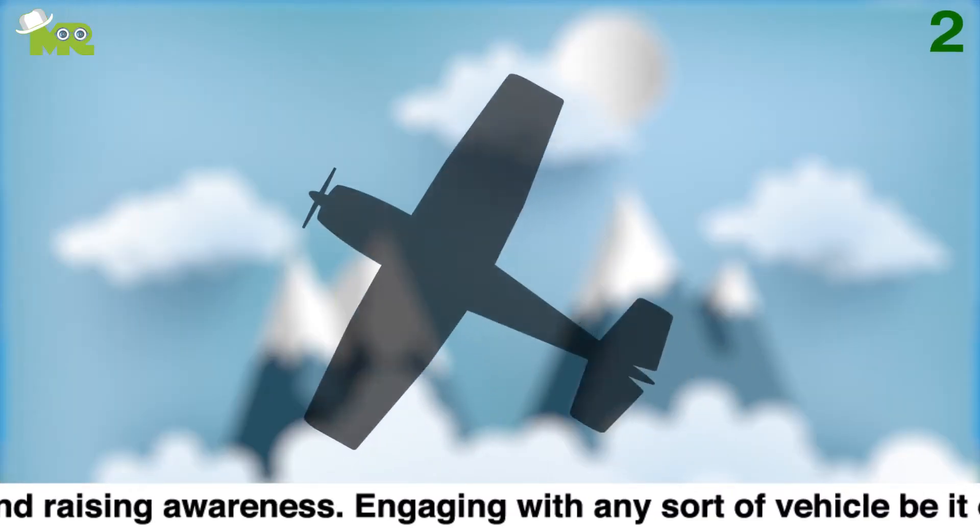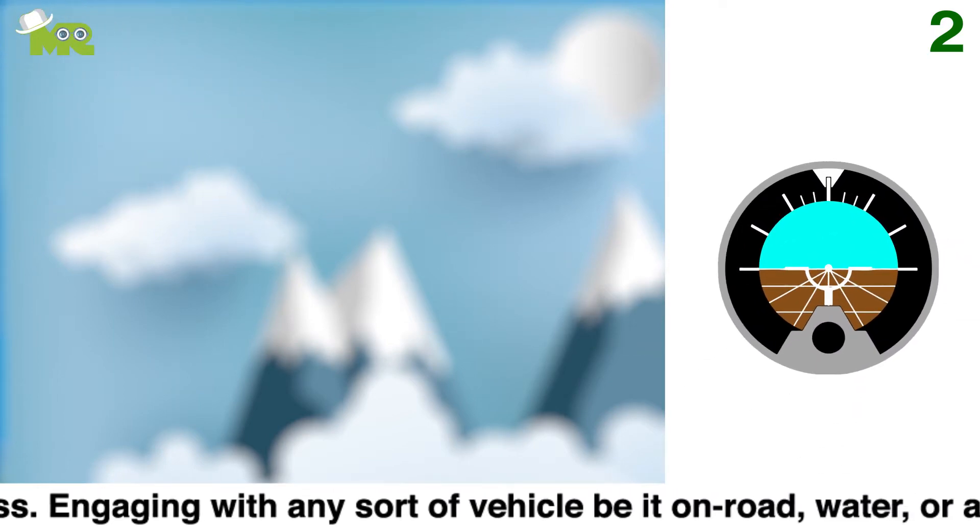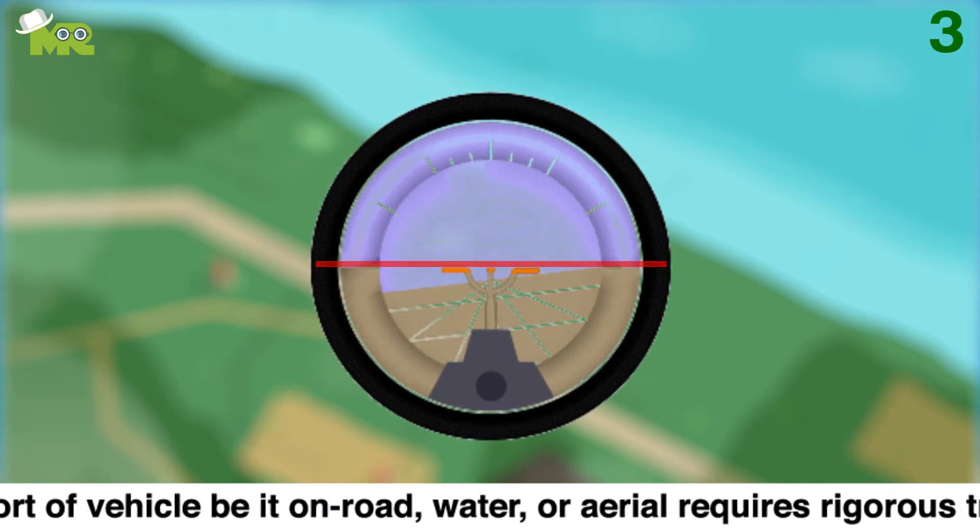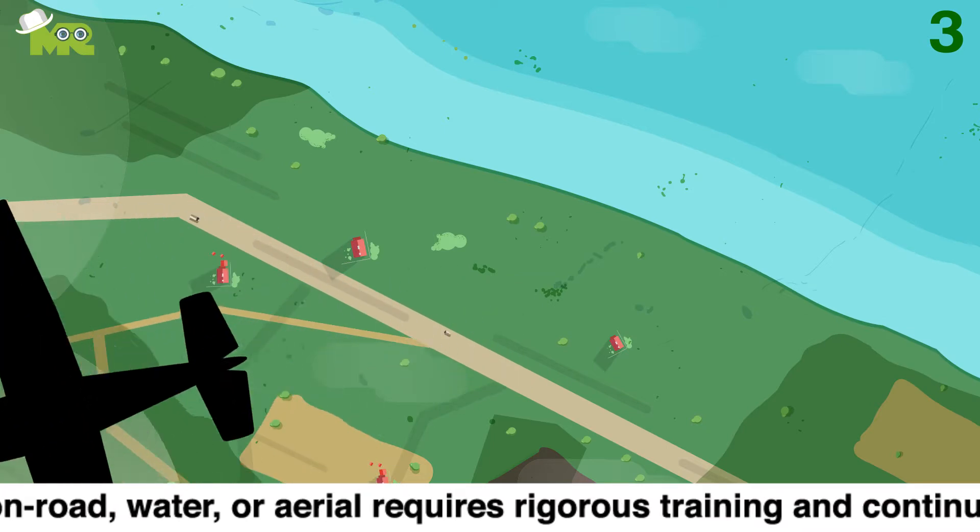Second, once you're in the air, line up your artificial horizon or altitude indicator to make sure that your plane is level. Third, in case you're falling below the artificial horizon, gently pull back on the yoke to raise the nose of the plane, lifting it.